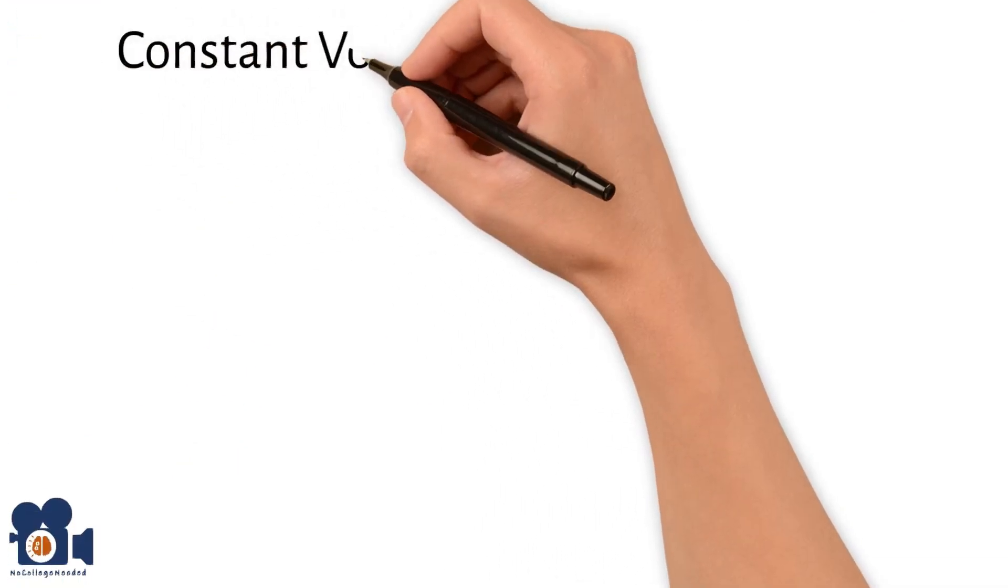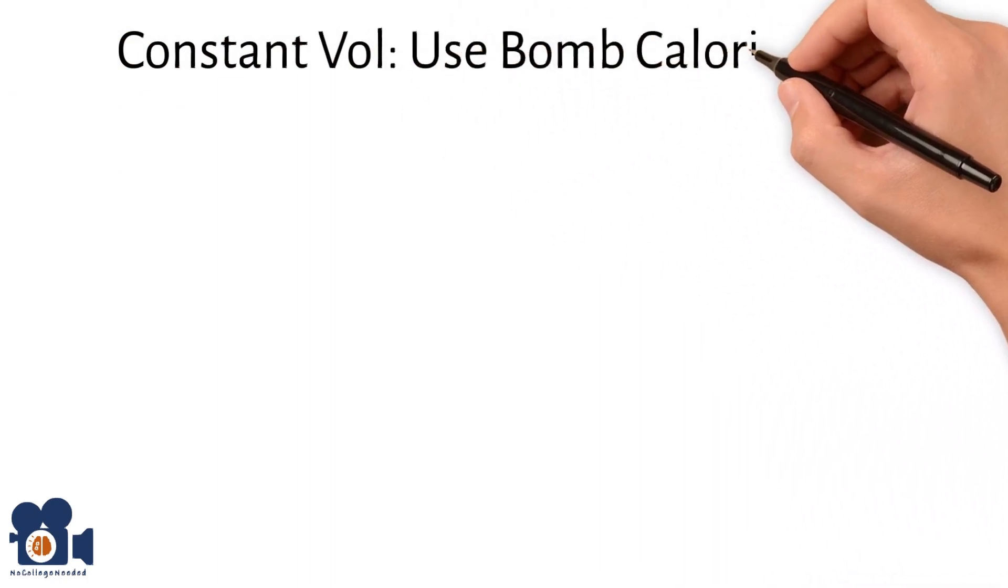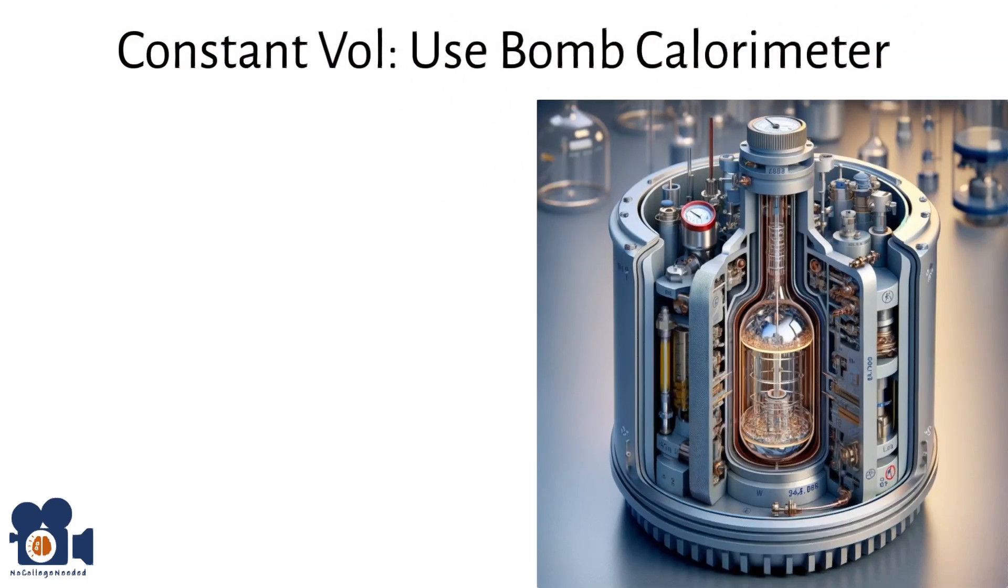For constant volume heat change calculations, we use bomb calorimeter, which is similar to the coffee cup example, but think of it as we took that cup, sealed it, and placed it in a water-filled sealed container, so pressure is constant.